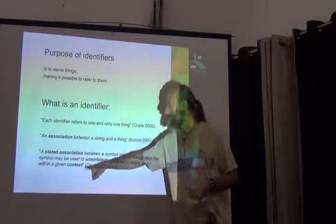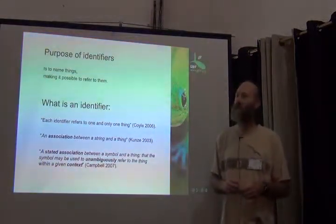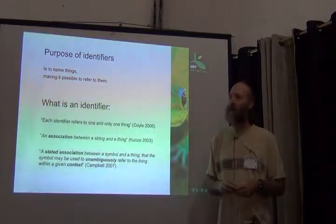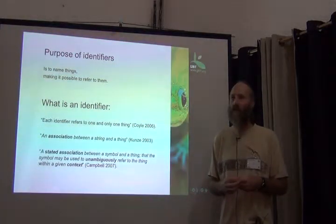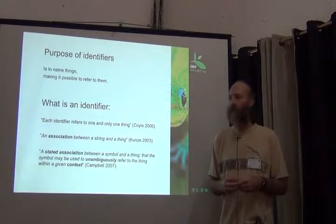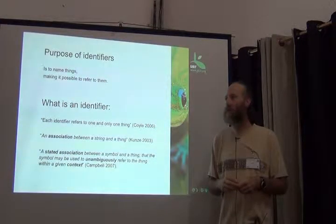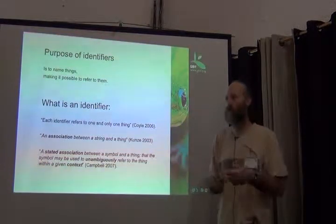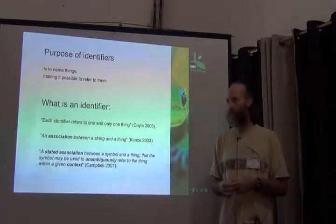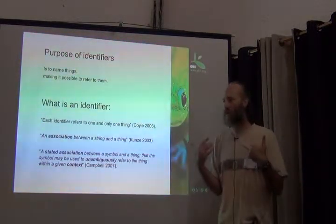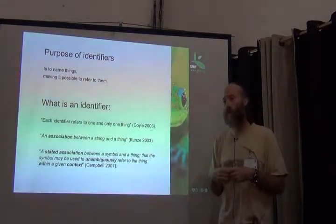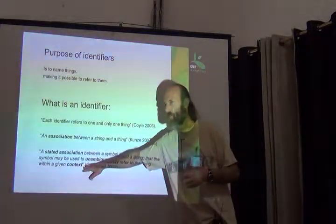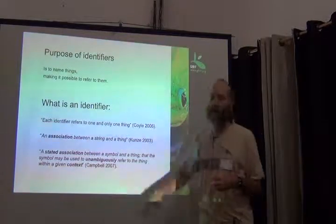Campbell adds that that is within a given context. The given context is the sort of thing where I talked about options for identifiers. For example, you might have an identifier in your own database or spreadsheet, but it's only meaningful to you — not to the rest of the world, and not necessarily unique within the whole world. So this context becomes important when we talk about identifiers.